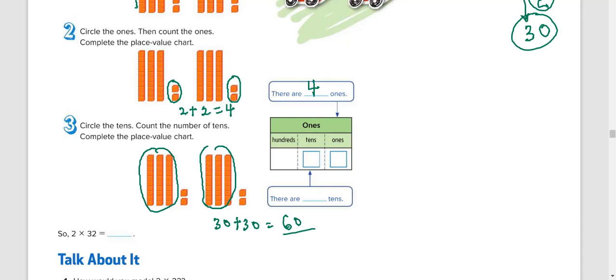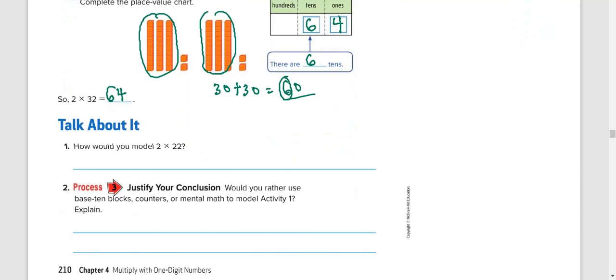So in the 1's place, you put the number here, 4. And in the 10's place, the number is 6 10. So you put 6. So your final answer, 2 times 32 is 64. Very interesting.